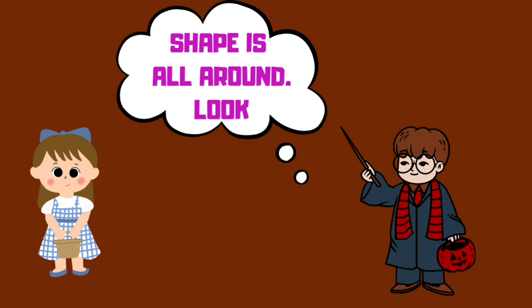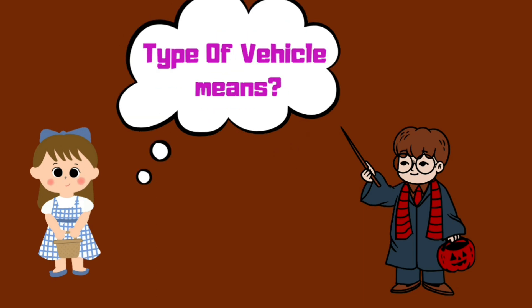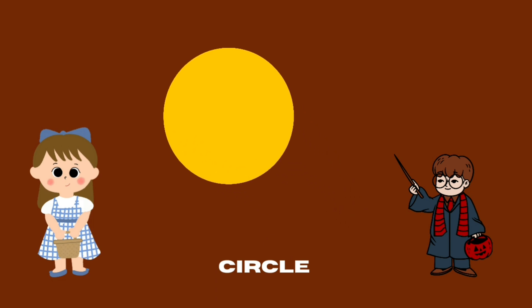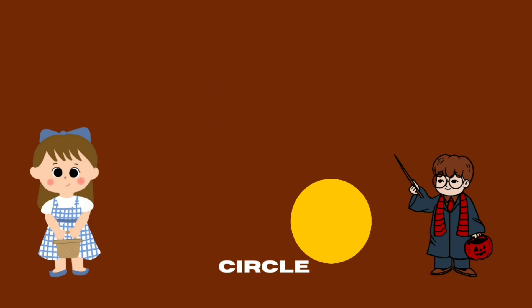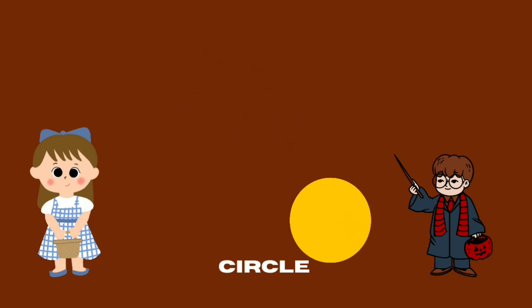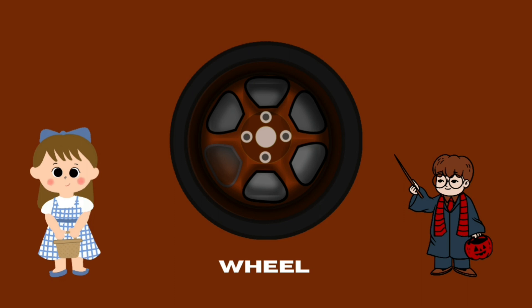He said everything is made of shapes. This boy said — what shape is this? Circle. Do you know objects of circle shape? Yes.